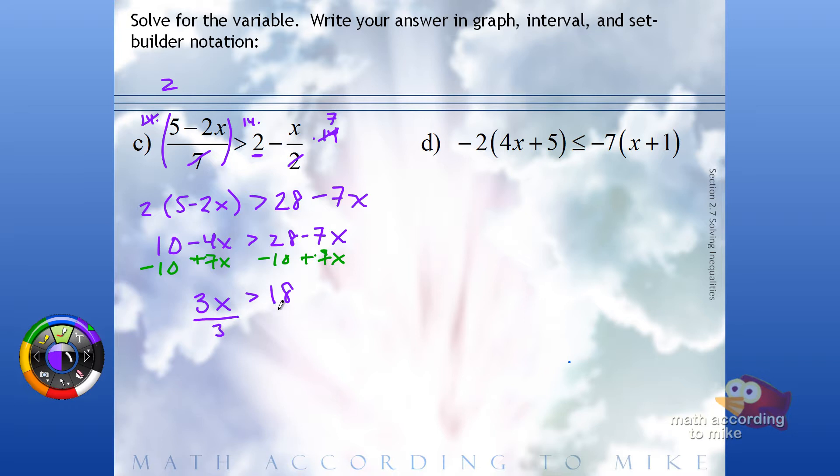Subtracting 10, we get 18 positive. Dividing by 3, which is positive, no sign change, we get x to be greater than 6. So set builder, x such that x is greater than 6.